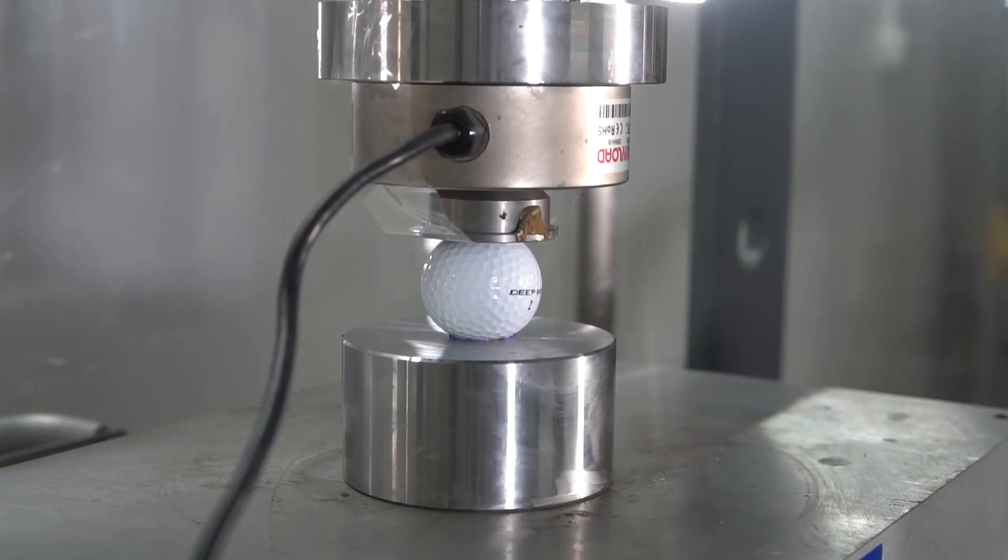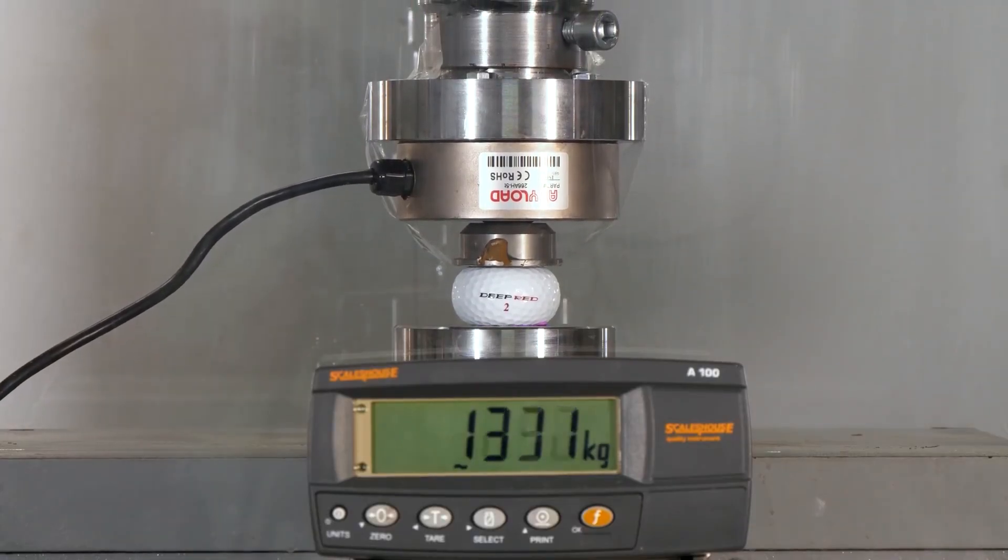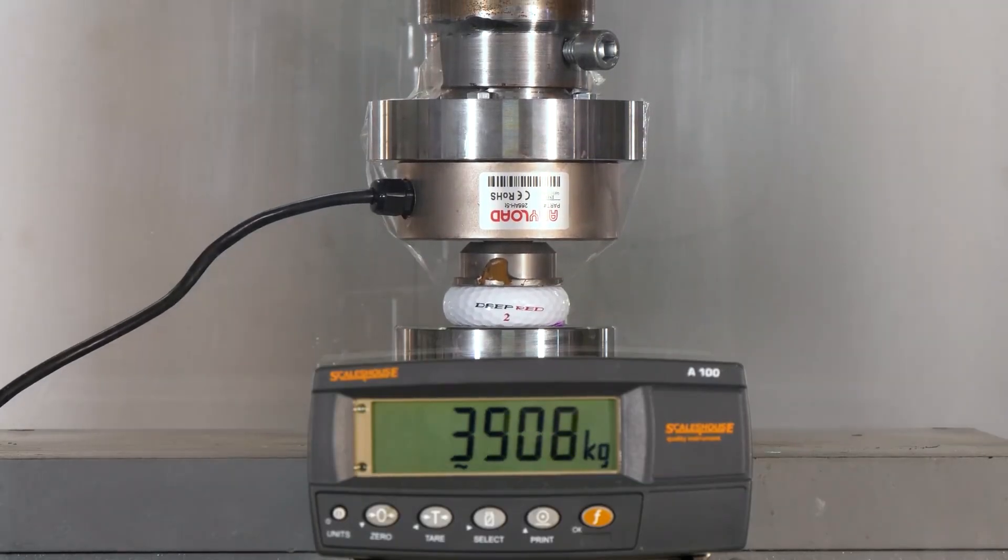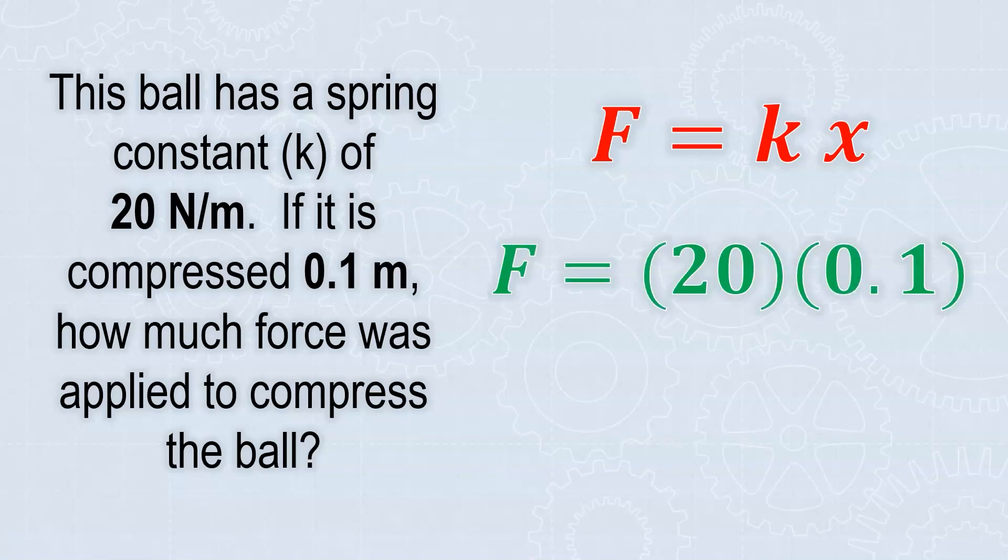The relationship Hooke observed between force and displacement of the ball as it's compressed can be expressed by the formula F equals k times x. The force applied is equal to the product of the ball's spring constant, k, and the displacement of the ball as it's compressed. This ball had a spring constant, k, of 20 newtons per meter. If it's compressed only 0.1 meters, how much force was applied to compress the ball? We use our force formula. When force is involved, we look for force. F equals k times x. k is 20. Displacement x is 0.1. Multiplying together, it's only 2 newtons of force to compress the ball 0.1 meters.